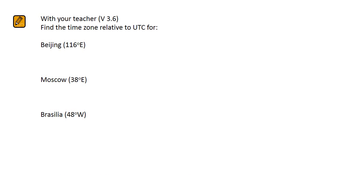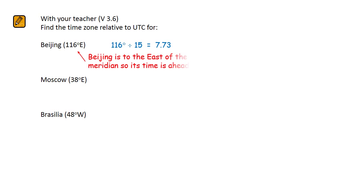In this example, we are asked to find the time zones for some different locations. To do this for Beijing, we take its longitude and divide by 15. We need to round this to the nearest number, rounding up to 8. As Beijing has a longitude to the east of the prime meridian, Beijing is 8 hours ahead of UTC.